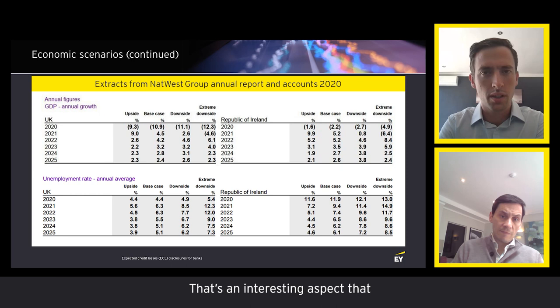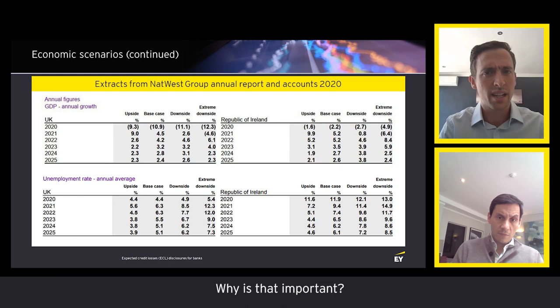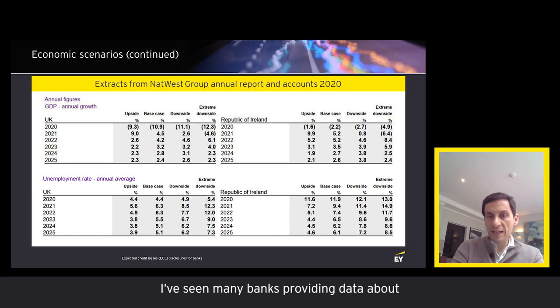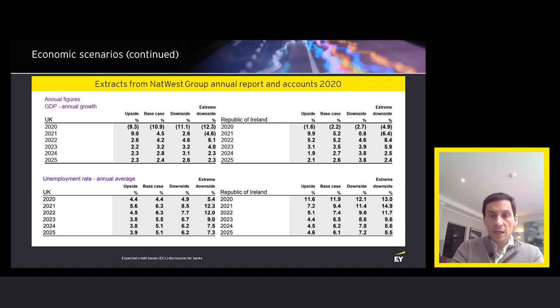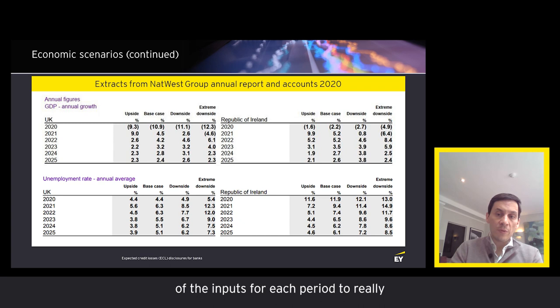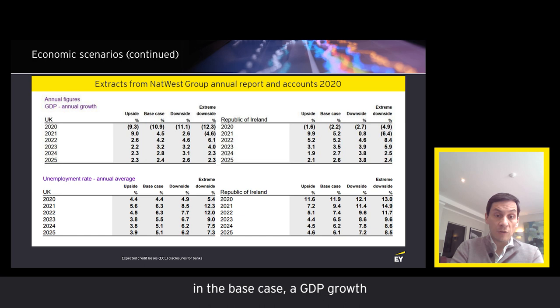Providing data per year rather than just an average over the entire forecast period is important. When inputs are particularly volatile — which can be the case in the current market environment — the average value doesn't necessarily give you the full picture. You really need to look at the value of inputs per period to understand the bank's economic outlook. In 2021, for example, some entities may expect GDP growth pretty soon in their base case, followed by lower, more stable levels going forward.